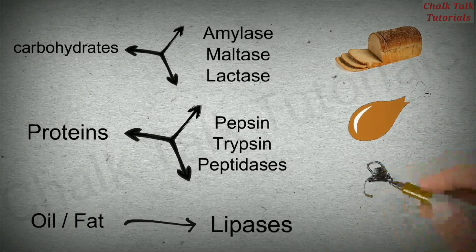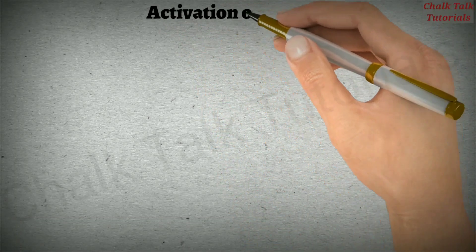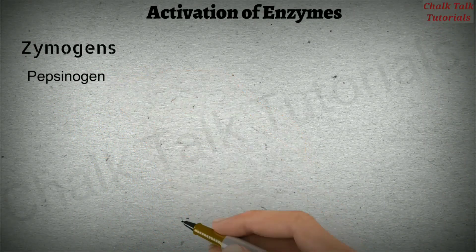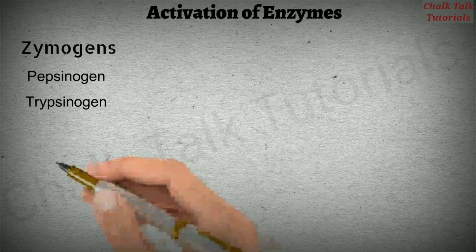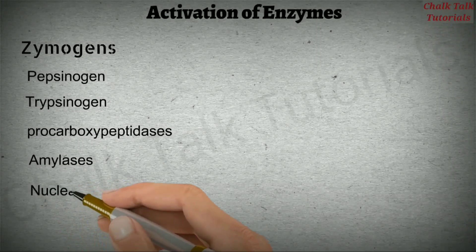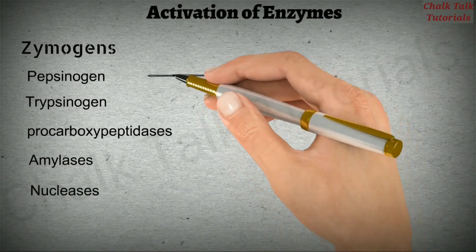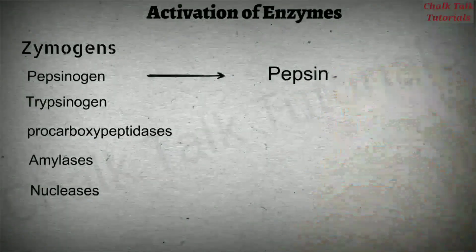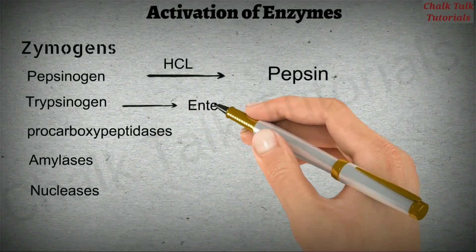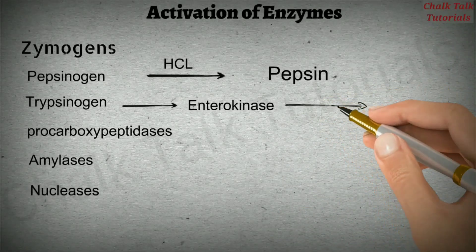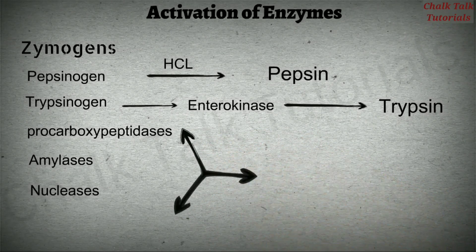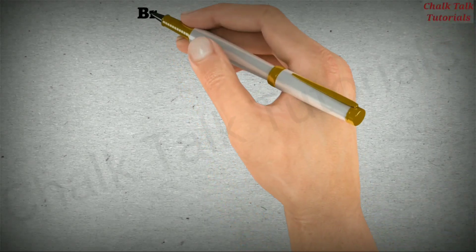Inactivated forms of enzymes are known as zymogens or pro-enzymes. Some examples of zymogens are pepsinogen, trypsinogen, procarboxypeptidases, amylases, and nucleases. Inactivated pepsinogen gets converted to its activated form, pepsin, with the help of hydrochloric acid (HCl). Inactivated trypsinogen gets converted to its activated form, trypsin, with the help of enzyme enterokinase. In return, trypsin helps other enzymes to get activated for the process of digestion.